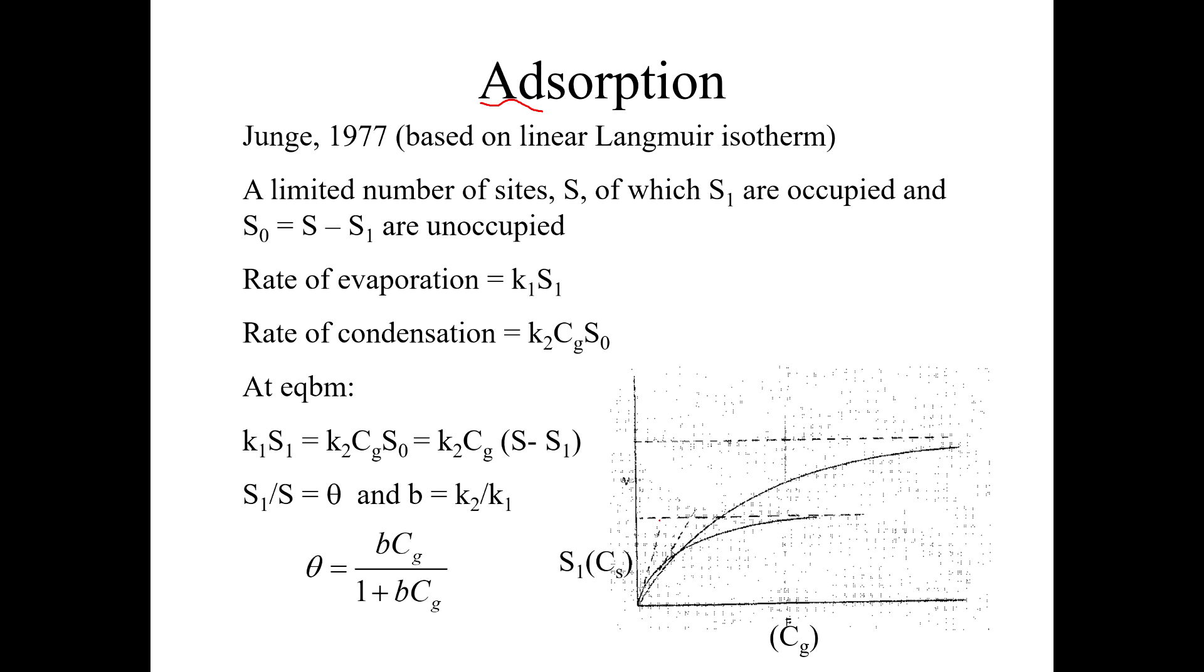You can describe this using basically a Langmuir isotherm, and you get an equation that looks something like this, where phi is the partitioning, it's the concentration of the chemical, the ratio of the concentration of the chemical in the particle phase to that of the gas phase. It's equal to a constant, kind of like a Langmuir constant, B times the concentration of the gas phase over 1 plus B times the concentration of the gas phase. BC over 1 plus BC, that's what gives it the curvature. This is like a Langmuir isotherm, it's got the curvature to it. The point is that as the concentration of your chemical goes up, the sorption doesn't continue linearly, it will at some point kind of level off because you've just run out of sites onto which the chemical can sorb.